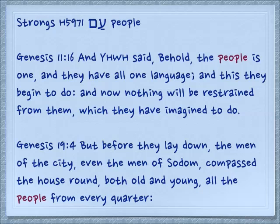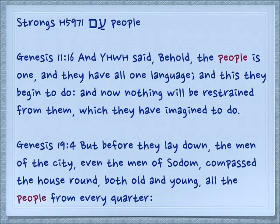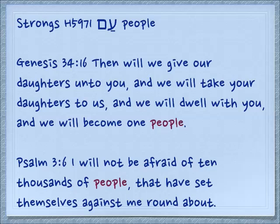Adding more confusion to the discussion of what is the word for people or nations, the word Am also means 'people.' Genesis 11:6: 'And Yehovah said, Behold, the people is one, and they have all one language. And this they begin to do, and now nothing will be restrained from them which they have imagined to do.' Genesis 19:4: 'But before they lay down, the men of the city, even the men of Sodom, compassed the house round, both old and young, all the people from every quarter.' Genesis 34:16: 'Then will we give our daughters unto you, and we will take your daughters to us, and we will dwell with you, and we will become one people' — from the incident of Dinah. Psalm 3:6: 'I will not be afraid of ten thousands of people that have set themselves against me round about.' So this Am can be a people group, or it can be any various assortment of people.